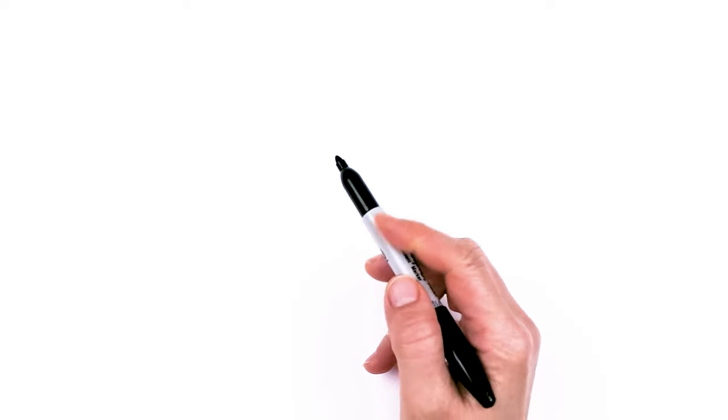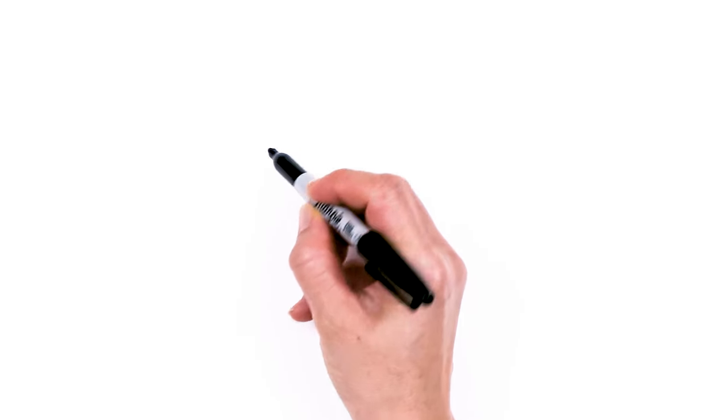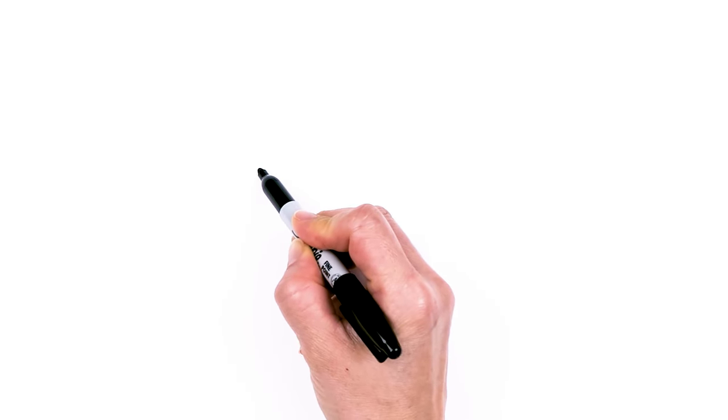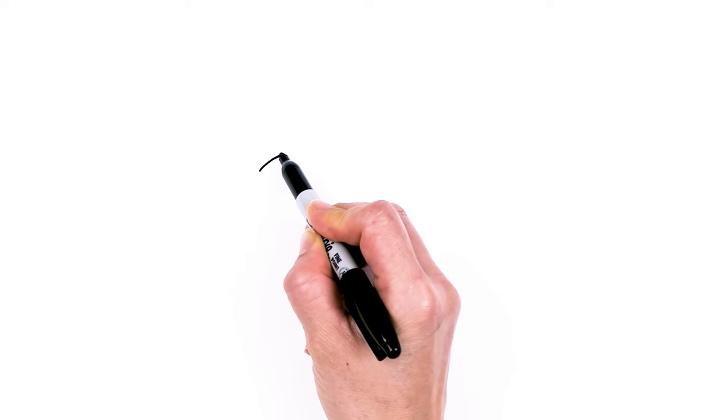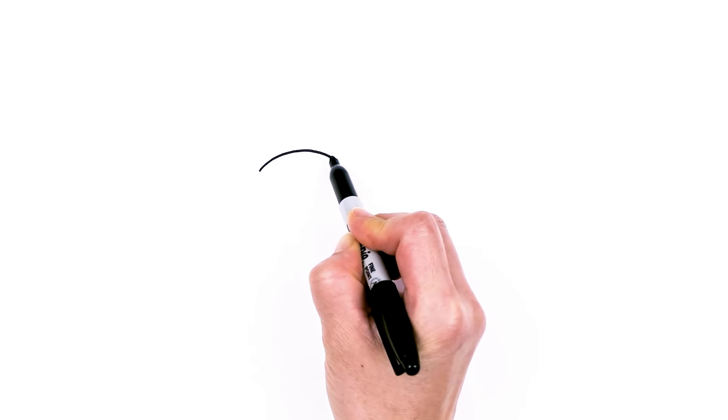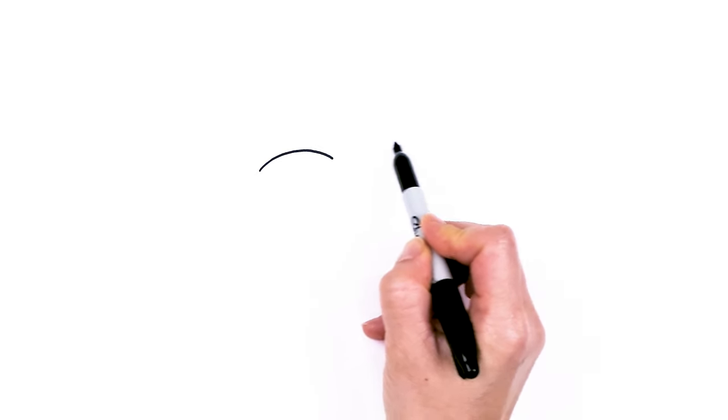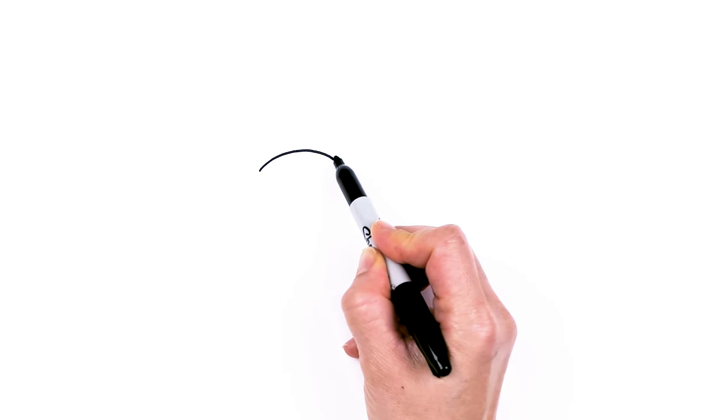To draw this very yummy dessert, let's first start by drawing two curves for the top of our crepe. So I'm going to start right here and I'm going to draw one curve. This one's going to be smaller and then about right there I'm going to draw another one much longer, much bigger.